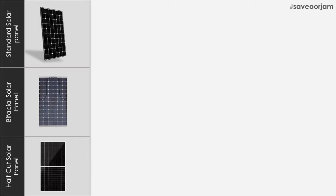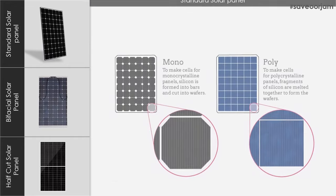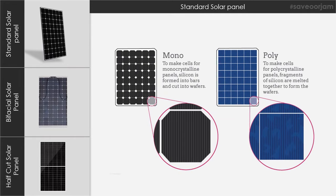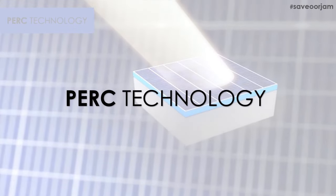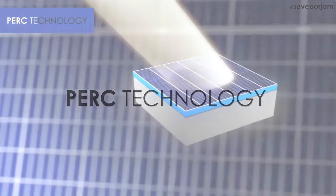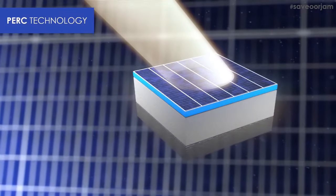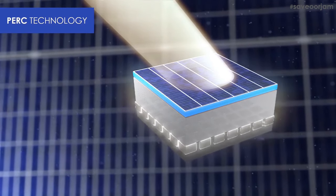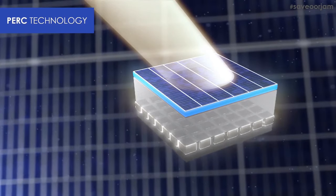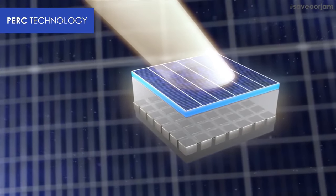The third category covers poly panels and mono panels. The standard solar panels use PERC Technology, which is used to improve the efficiency of all panels.